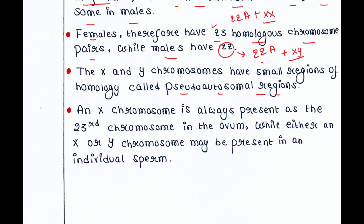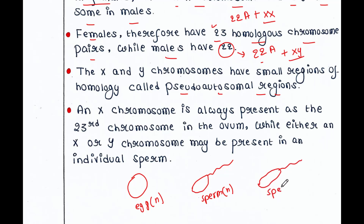An X chromosome is always present as the 23rd chromosome in the ovum, while either an X or Y chromosome may be present in a sperm. Egg cells and sperm cells are both haploid. An egg contains 22 autosomes plus one X chromosome, while a sperm contains either 22 autosomes plus one X chromosome, or 22 autosomes plus one Y chromosome.